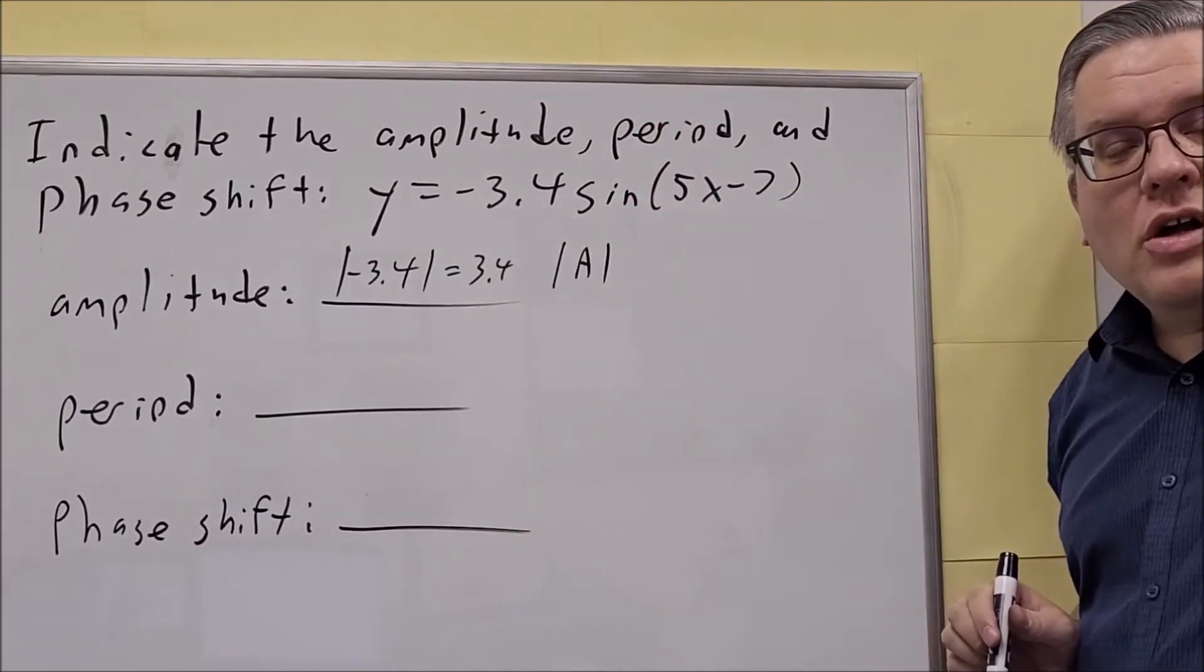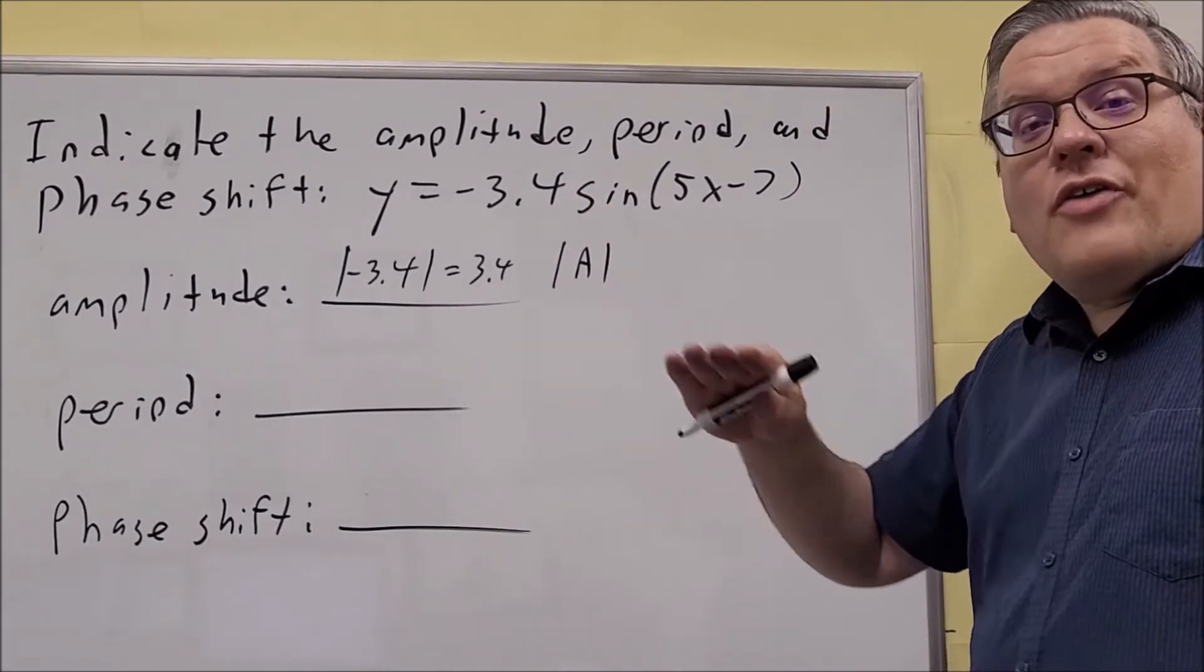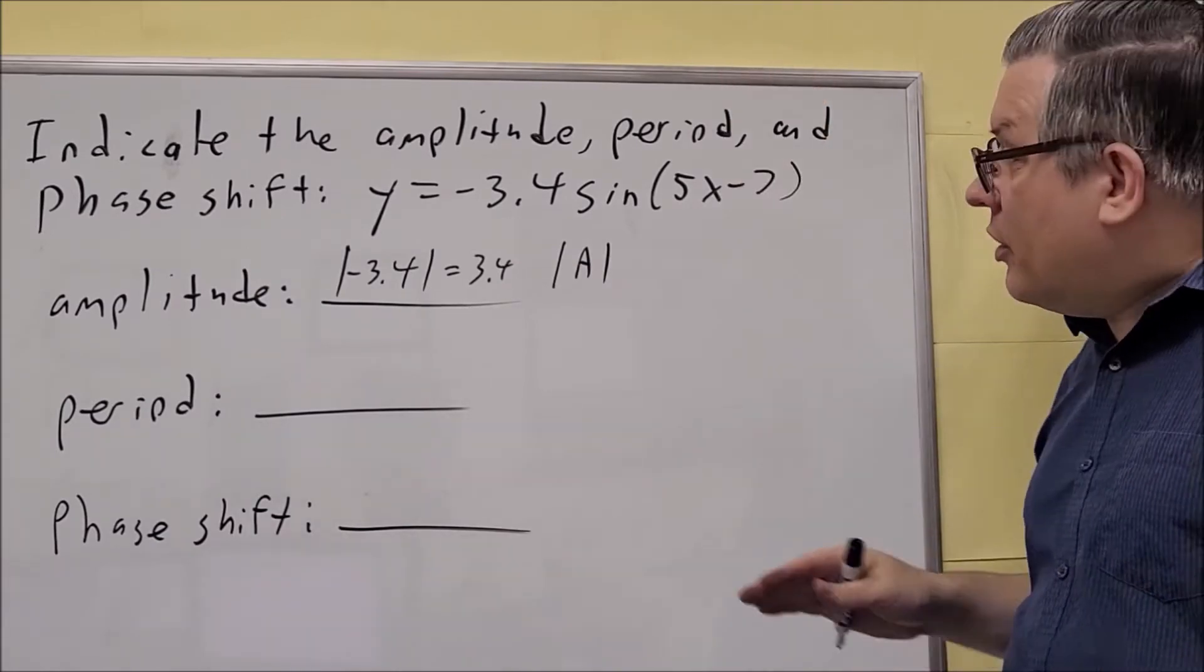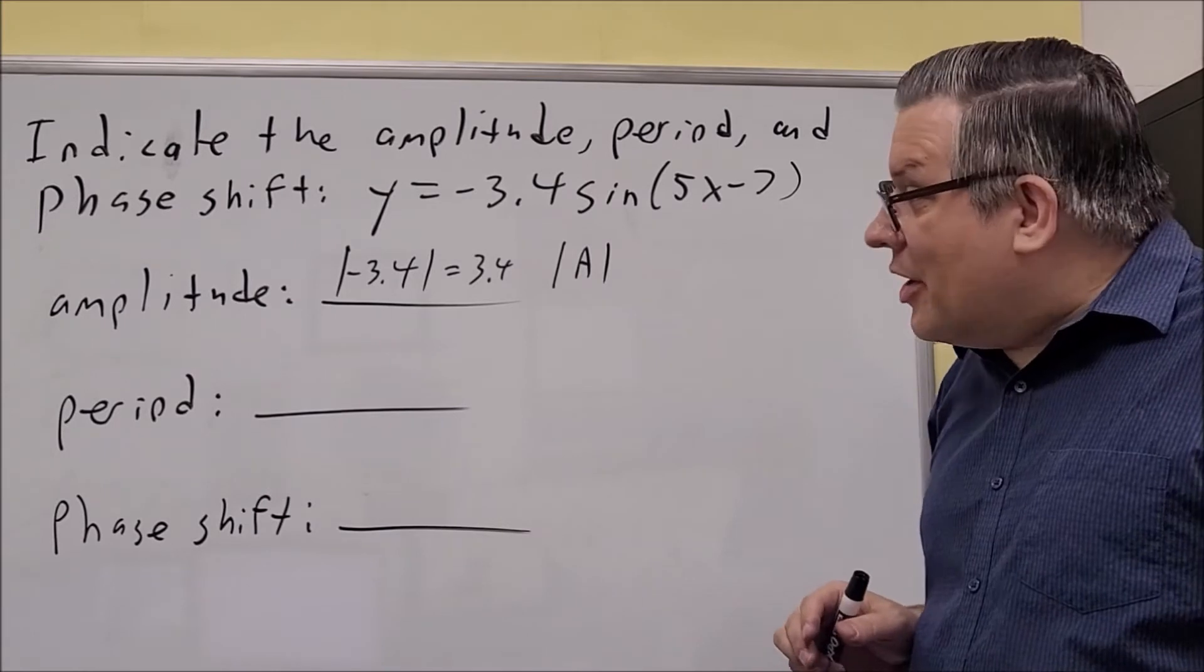So the amplitude is 3.4. Your amplitude is always positive because remember that's the distance from the center of the graph to the highest or lowest point there is your amplitude. So it should always be positive since we're talking about a distance there.